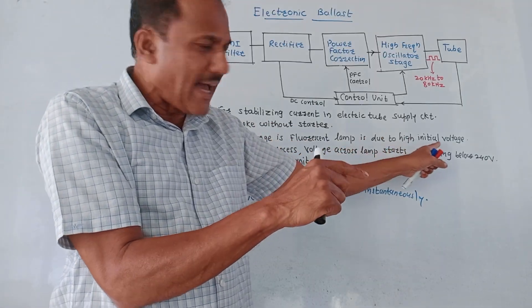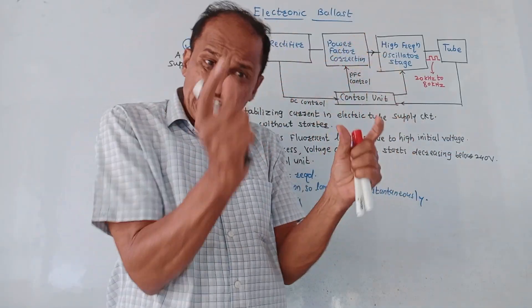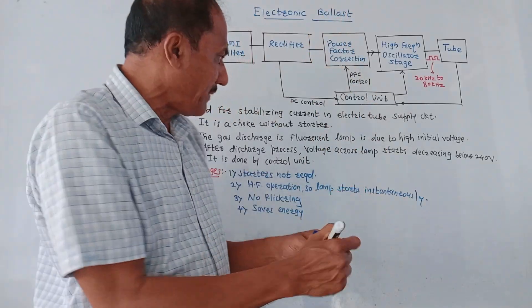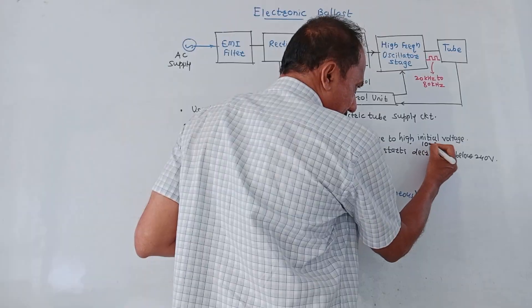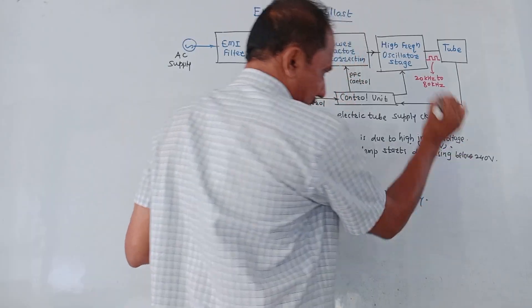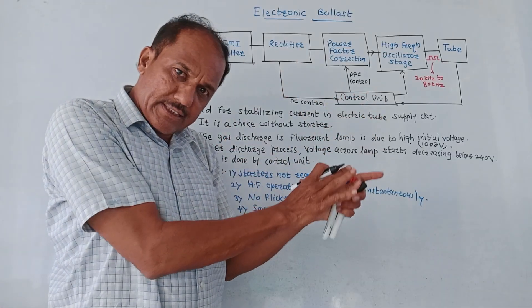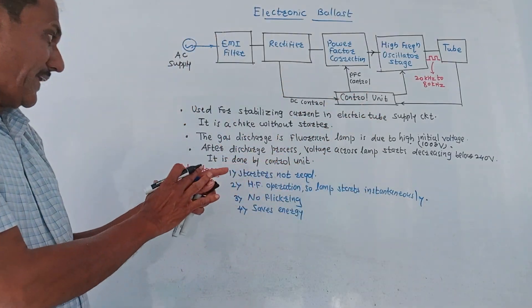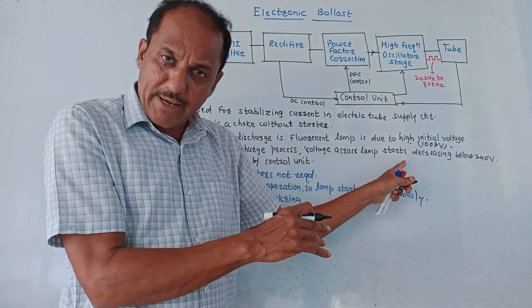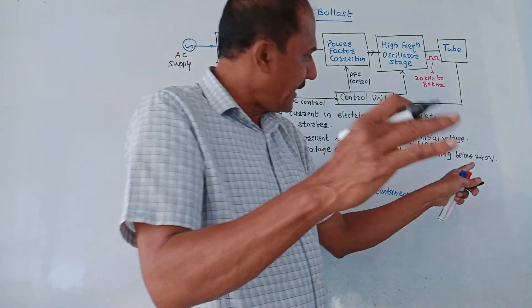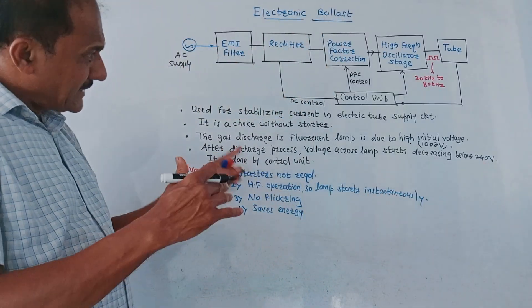...is due to the high initial voltage. That means if you are talking about a fluorescent lamp, then initially the gas discharge inside the fluorescent lamp takes place. This is due to the application of high initial voltage which is around 1000 volt. So due to this higher voltage, the gas discharge inside the fluorescent lamp takes place. After discharge process, the voltage across lamp starts decreasing and it will be around 240 volts.